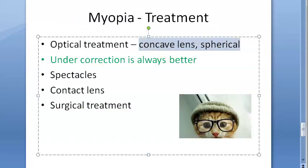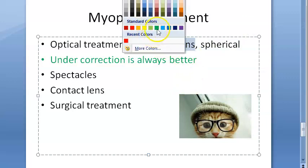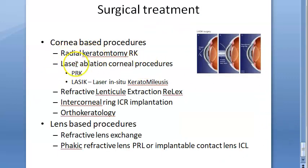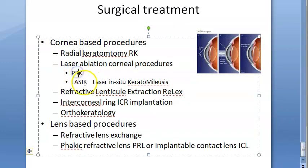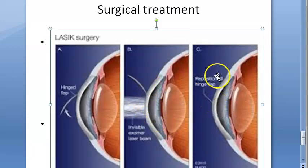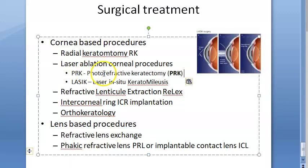Treatment for myopia: concave lens. Surgical treatment includes laser procedures — PRK and LASIK. In PRK (photorefractive keratectomy), there is no flap. In LASIK (laser in situ keratomileusis), a flap is created, the corneal curvature is adjusted, and then the flap is closed.